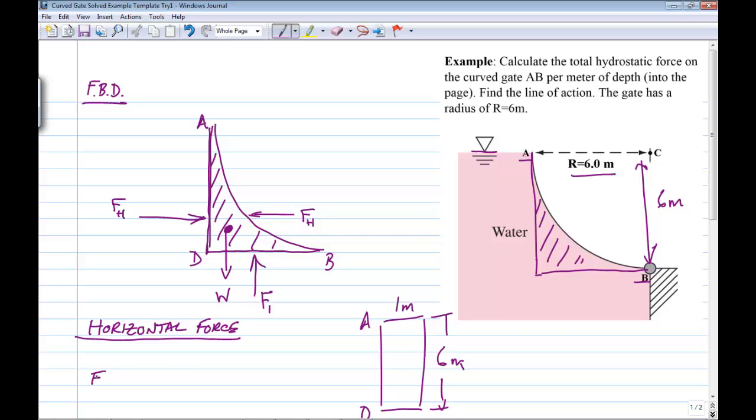Now we know for that plane surface, it's very straightforward. The FH, the horizontal hydrostatic force, is just going to be gamma of the fluid, the height of the center of gravity of this area, times that area. So A, I'm going to call it AAD. The height of the centroid, or the depth from the free surface for that surface, is just 3 meters. And of course AAD is going to be 6 meters times 1 meter, or 6 square meters.